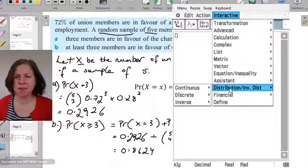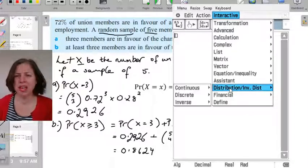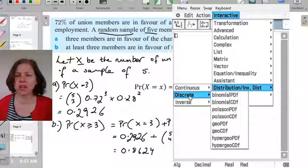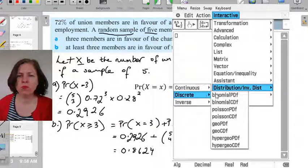So in this example it's how many people have a certain opinion - how many people are in favour or not in favour, so we're definitely counting, so we're in discrete. And we know it's binomial because we've already identified that. And so we've got two choices here that are binomial: there's binomial PDF and binomial CDF.